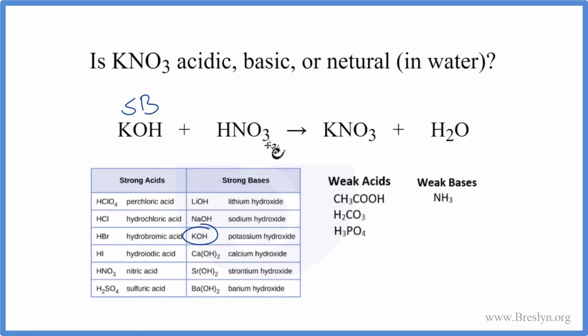HNO3, the H tells us an acid. We go down here, and here's nitric acid, so that's a strong acid. So we know the strength of the acid and the base now.